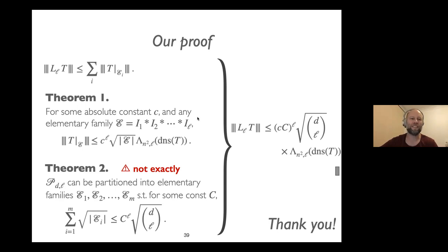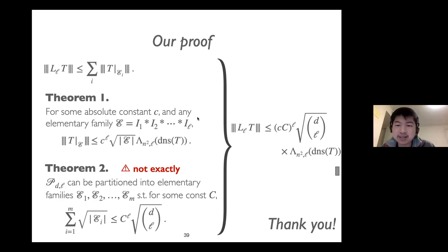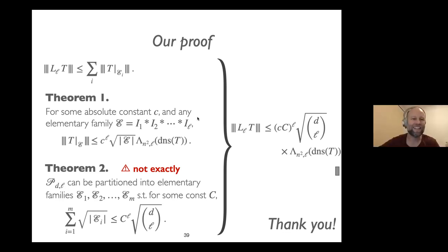A question from the audience: for total functions, randomized versus quantum — now that we know the separation is at least a cubic power and at most a quartic power, what is the right answer? The speaker noted that many people believe the cubic separation is correct, which would mean the lower bound obtained is optimal.